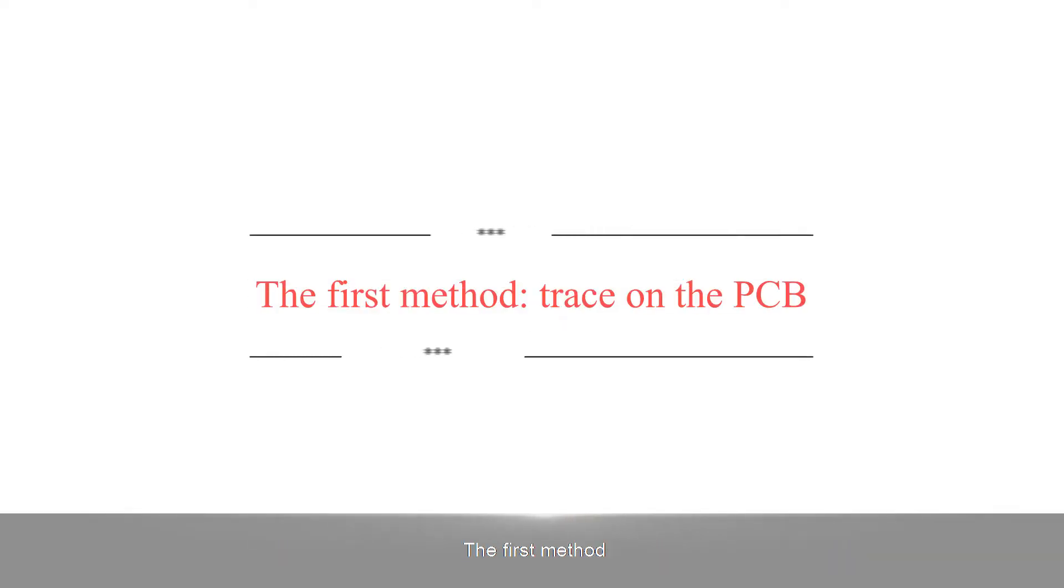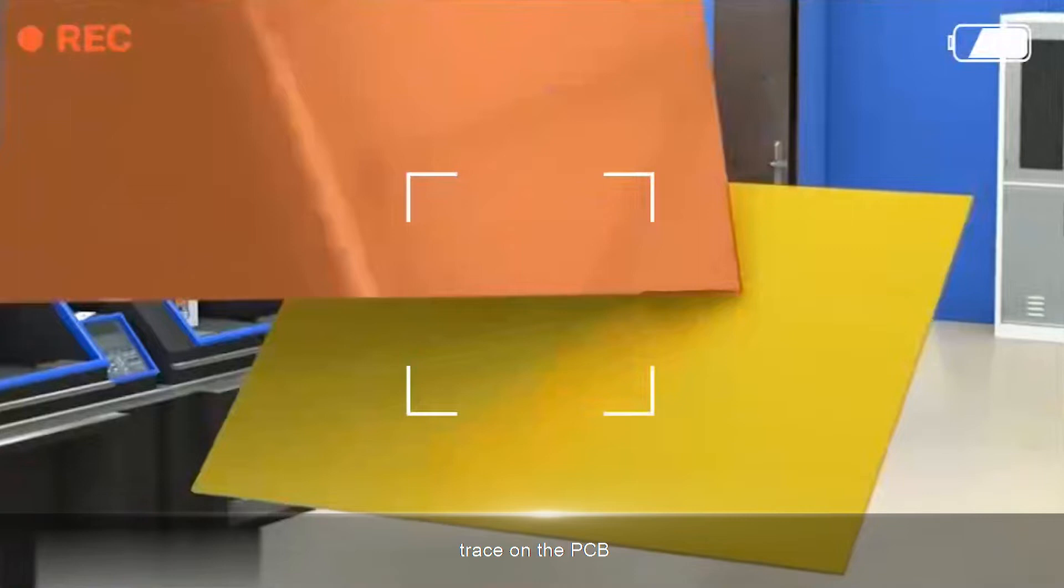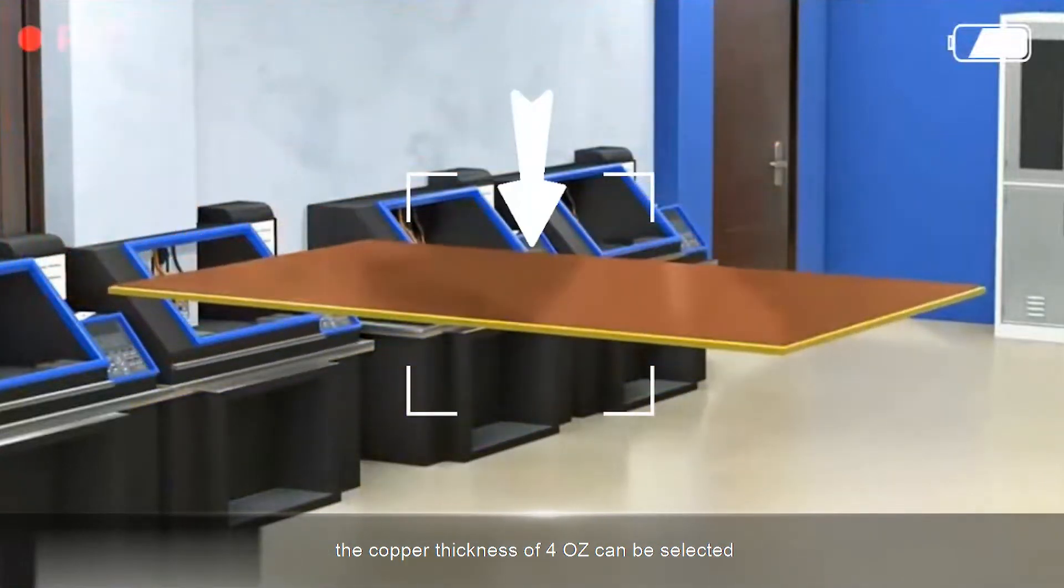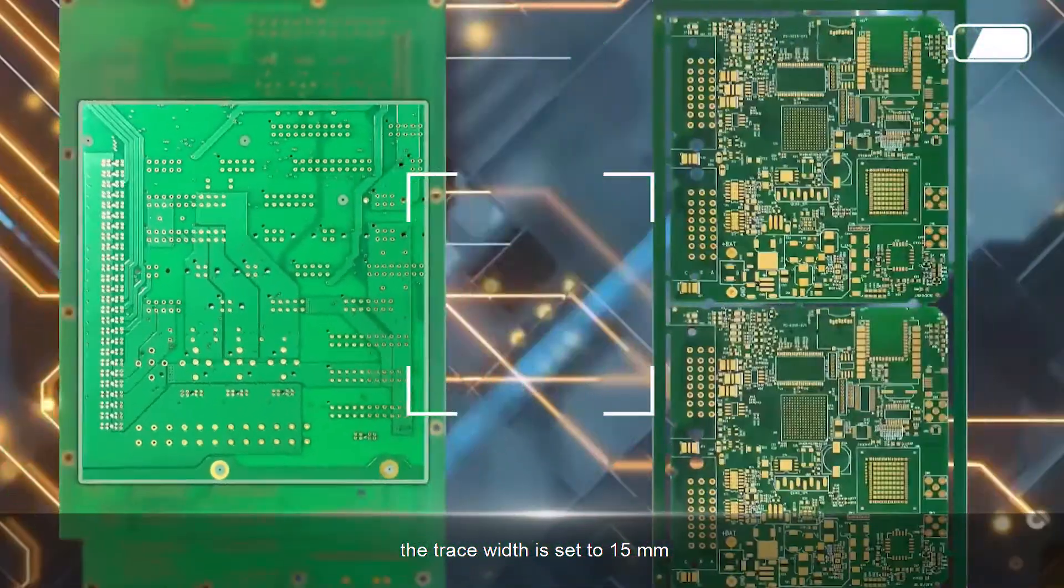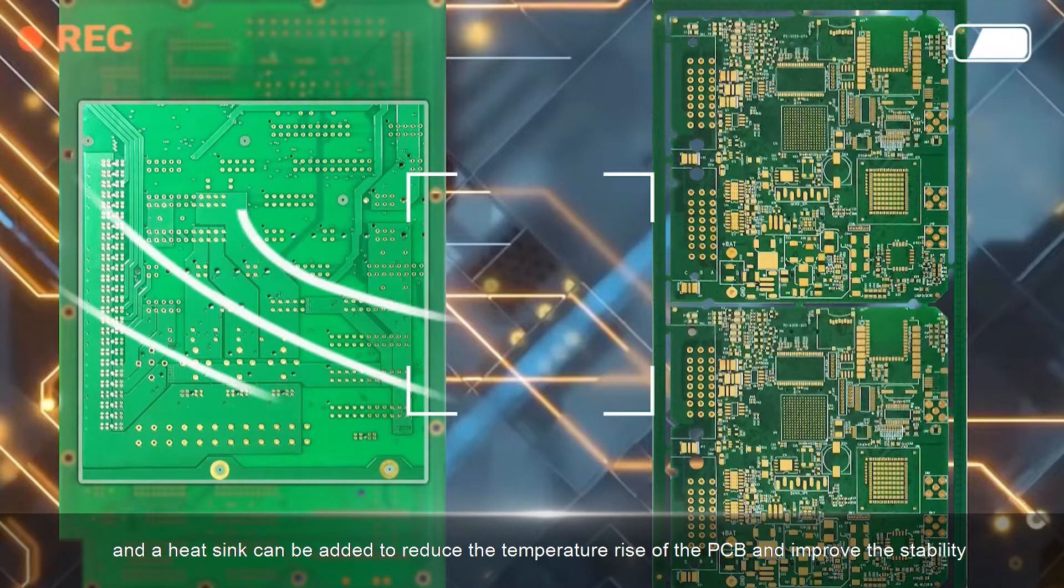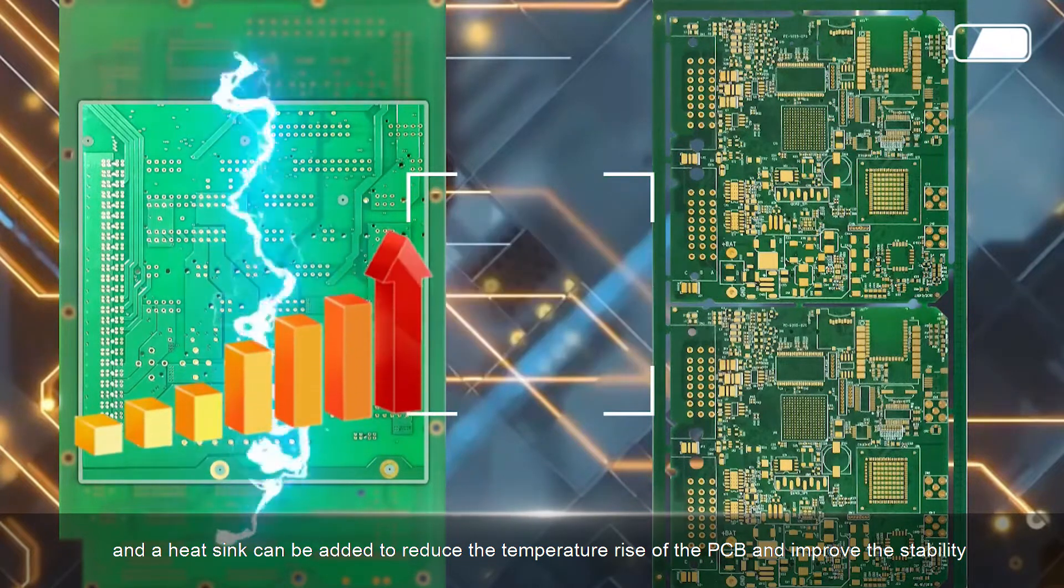The first method is trace on the PCB. If a current of 100A is to be used, the copper thickness of 4oz can be selected, the trace width is set to 15mm, double-sided trace, and a heatsink can be added to reduce the temperature rise of the PCB and improve stability.